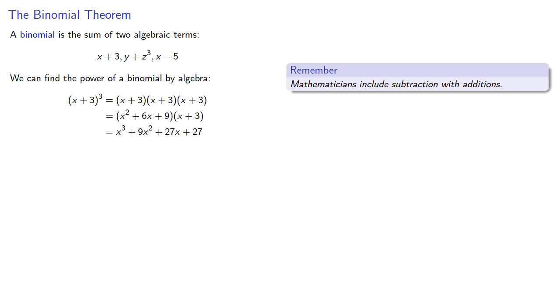But for high powers, this can be tedious. (a+2)⁵ will be the product of five factors of a+2, which will be a lot of work.